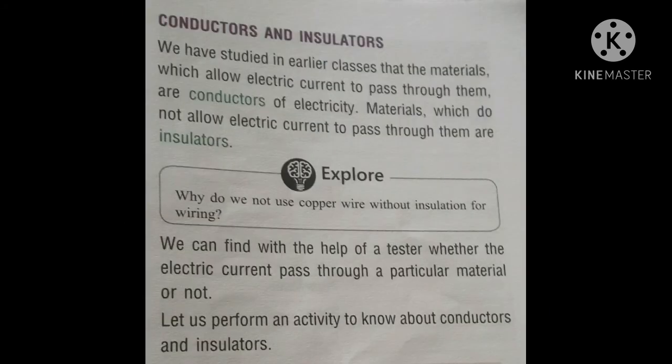Now the topic is conductors and insulators. You have already studied this in lower classes. Conductors are those materials which allow electric current to pass through them and provide the path for the flow of electric current. Insulators are those which don't allow electric current to pass through them.